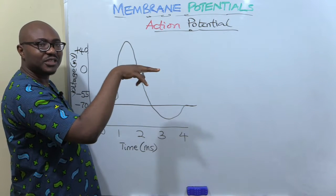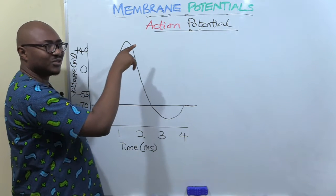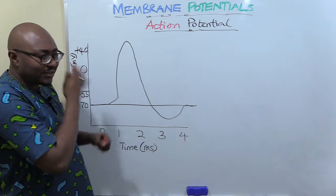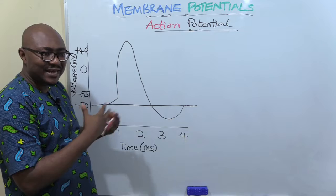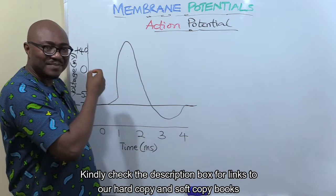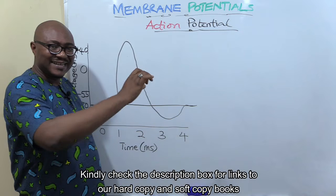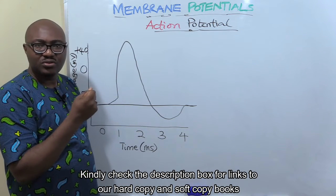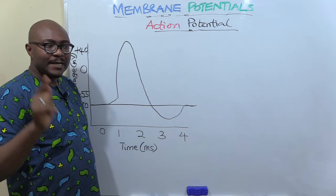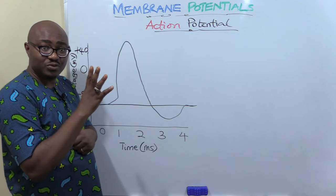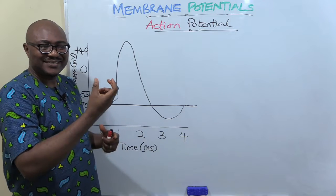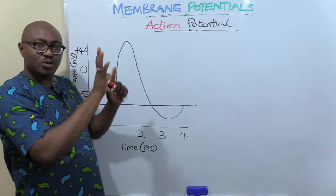We've dealt with the resting membrane potential. Now we are going into action potential. When the cell is at rest — specifically the nerve cell, excitable tissues, nerve and muscle — they are at rest, not doing any work. The nerve is a biological wire; its main purpose is for conduction, for communication, to propagate and transmit electrical impulses. When there's a stimulus — a change in the environment — it detects it, generates electricity, and transmits it to the control center.